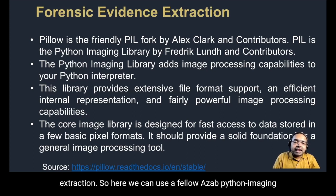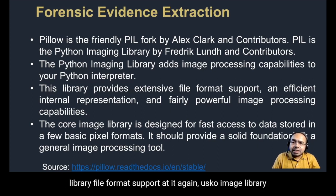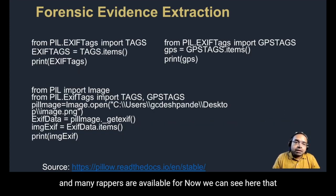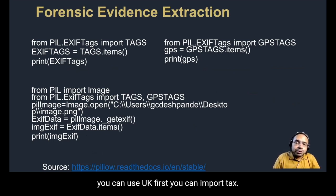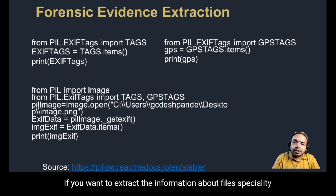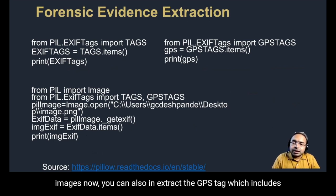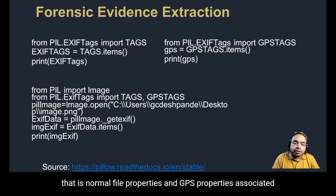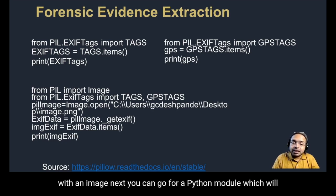For forensic evidence extraction, we can use Pillow, a Python imaging library that provides extensive file format support. It is a core image library with many wrappers available. You can import EXIF tags to extract information about image files. You can also extract GPS tags, which include latitude and longitude information. This allows you to extract both normal file properties and GPS properties associated with an image.